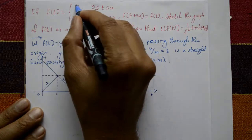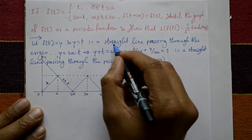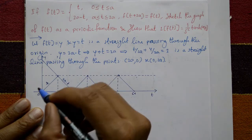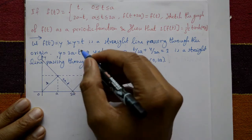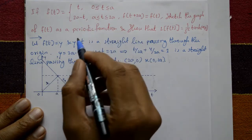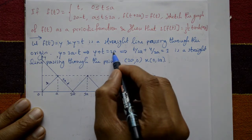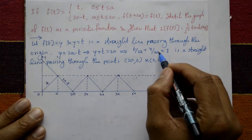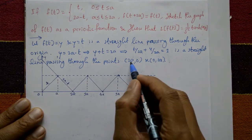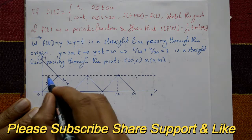Let f(t) = y. So y = t is a straight line passing through the origin. Also, f(t) = y or y = 2a minus t, which gives t + y = 2a — a straight line passing through the points (2a, 0) and (0, 2a), and also through the point (a, a).